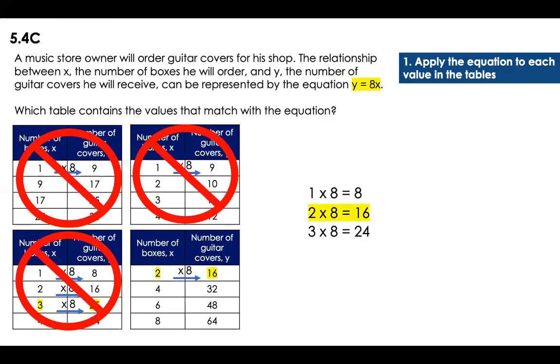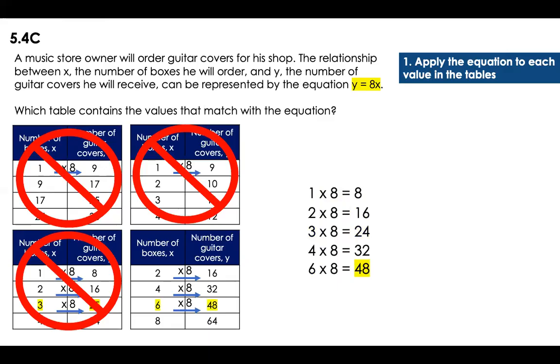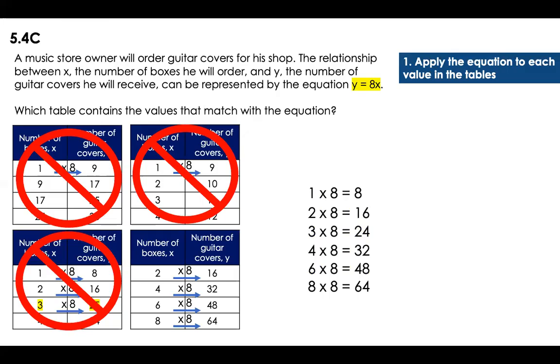2 times 8 is equal to 16. That means that 4 times 8 is equal to 32. Yes. 6 times 8 is equal to 48. Yes. And then, of course, 8 times 8 is going to be equal to 64. So yes, this was the table that matches with the equation.